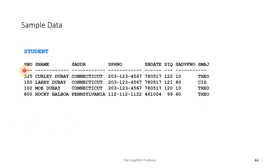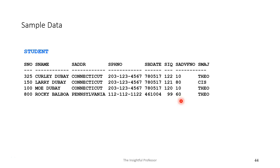The student table: SNO is the primary key, then we have name, address, phone number, and birth date. Notice the birth date is not a date data type — it's simply a character string. This is an older way that people chose to represent date-time data using character strings. We should really be using date-time data types, but we wanted to show a variety of different techniques within our database. We also have the IQ as an integer, and then the student advisor faculty number — a foreign key that identifies a row in the faculty table — and the student major, which identifies a row in the department table.